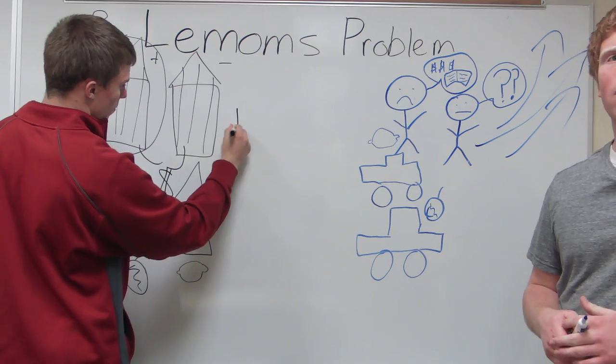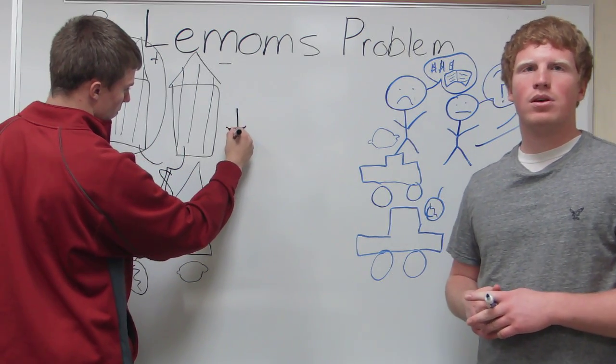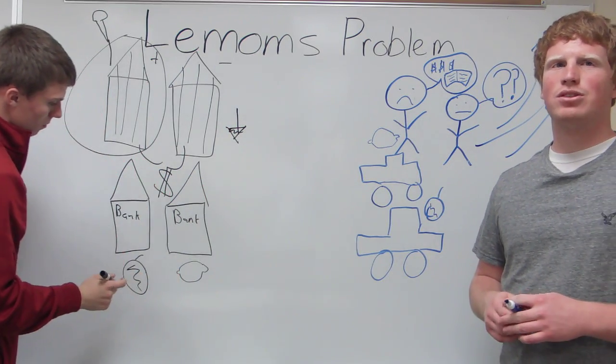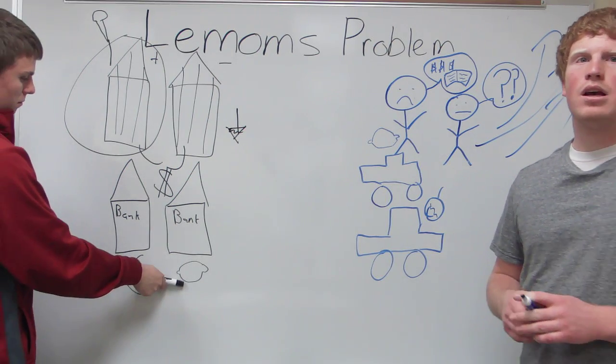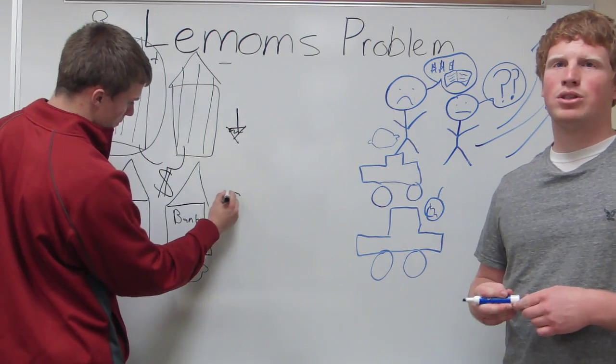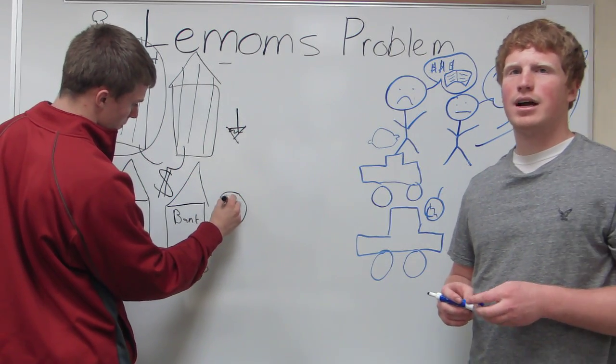You might be thinking, well, how is this a lemons problem? Due to the fact investors could not tell which banks were plums and which ones were lemons, they didn't know which ones had subprime mortgages, so they just remained out of the market entirely.